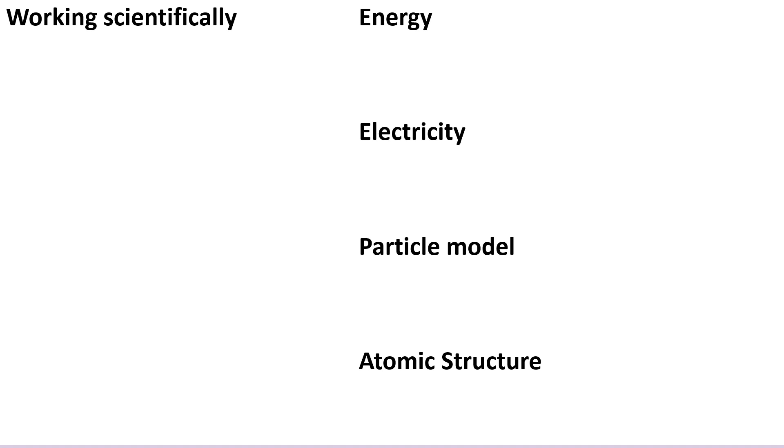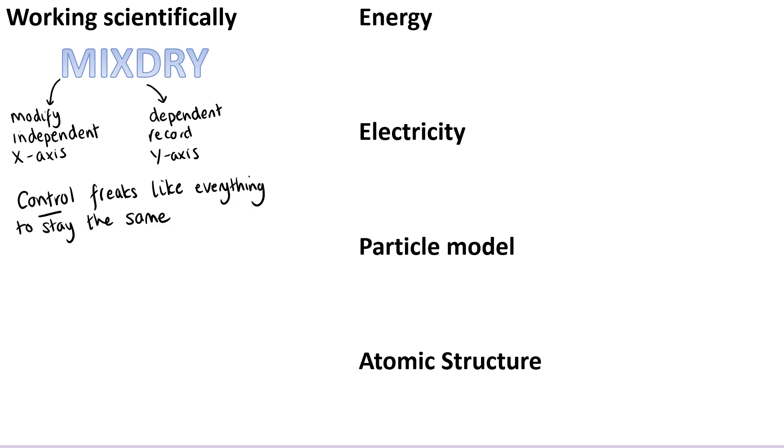The working scientifically skills are always a good place to start because they're assessed in all six science papers. So the first thing would be the variables for an investigation. MIXDRI stands for: we modify the independent variable which goes on the x-axis if you're drawing a graph, and then the dependent variable is the one that you record and it goes on the y-axis. Control variables are the things that we force to stay the same between different trials in order to make the data valid. So I always remind my classes that I am a control freak. I like everything to be the same all the time. I want the same seating plan every lesson, I always have my same lilac colored power point. I'm a control freak, things stay the same.